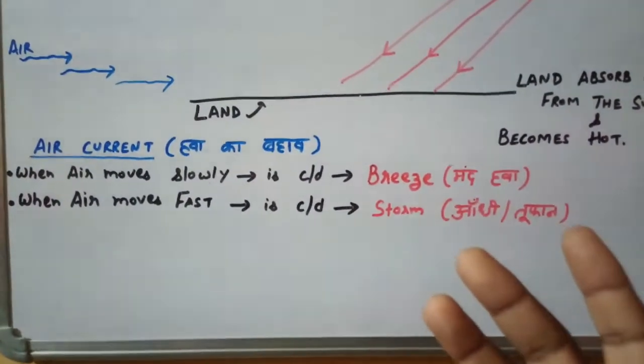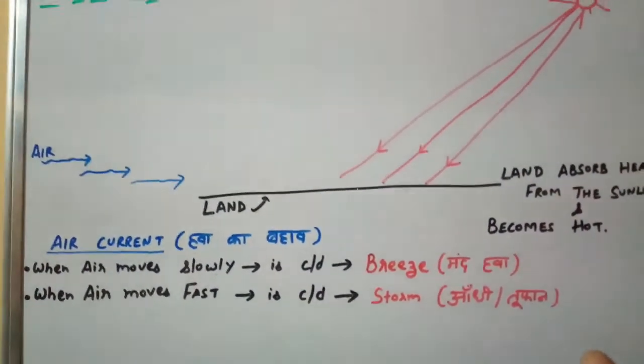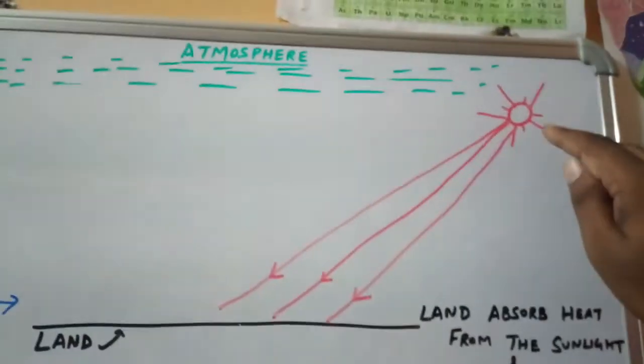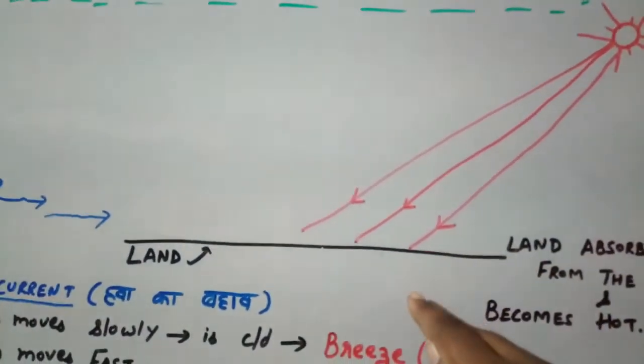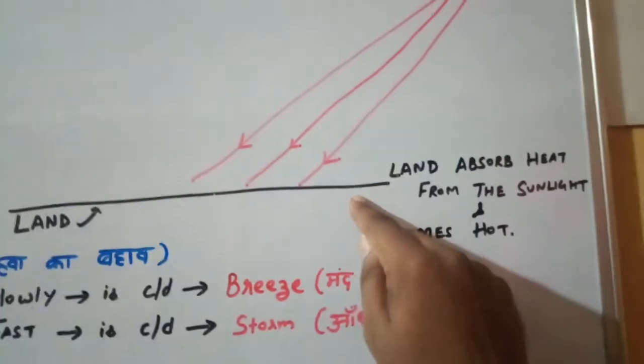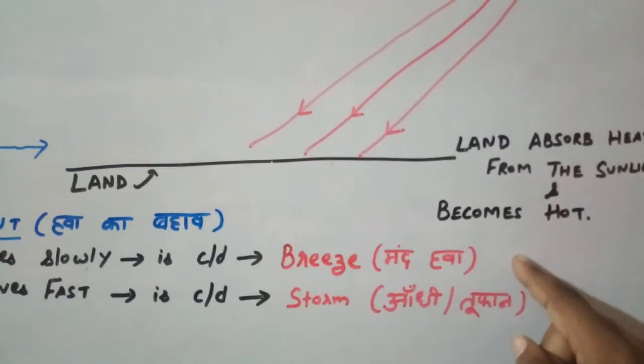So how does this phenomenon happen in the environment? It is due to the movement of air, that is the wind. The sunlight from the sun when falls on the land, this land absorbs the heat from the sunlight and it becomes hot.